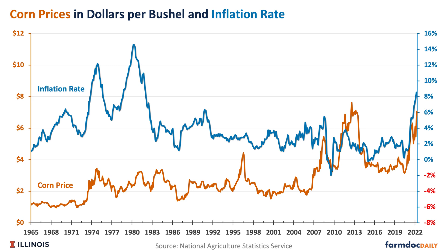Inflation had an increase in 1973 and continued at relatively high levels through 1981. That increased inflation during that period corresponded to the new corn price plateau of $2.36. That increase in inflation went up at roughly the same time. However, if we look at the 2006 plateau, that was not associated with an increase in inflation. So one time we had an increase in inflation and it corresponded to a corn price increase — the other time it didn't.